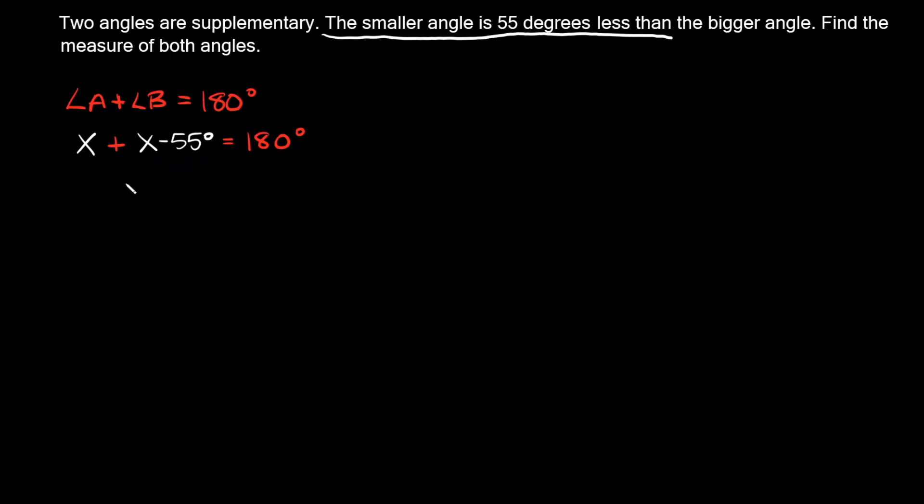Now all we have to do is solve for X. So first thing I'm gonna do is combine like terms. We have X plus X, so that's equal to 2X. And then I have this minus 55 degrees that I'm also gonna bring down, minus 55 degrees. And remember this is all equal to 180 degrees.